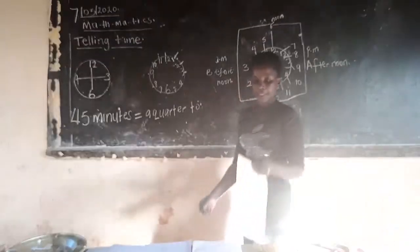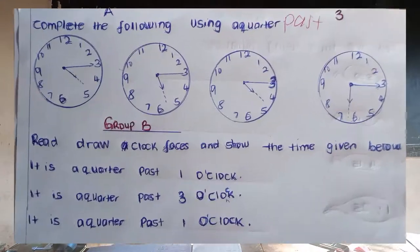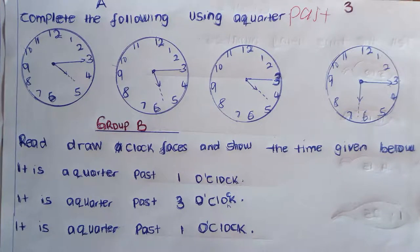Let's mark our work and see whether we passed it or not. Okay, Group N — number one: it is a quarter past four. If the long hand is in twelve and the short one is past four. Number two: the long hand should be in twelve and the short one past five, and we say a quarter past five o'clock.